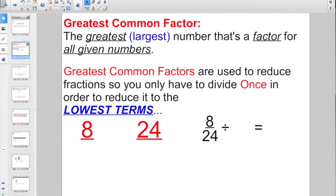So the greatest common factor, the G stands for greatest, which means the largest number, that's a factor, that's the F, for all the given numbers. All the given numbers is what makes them the common factor.